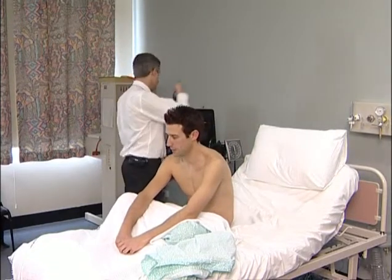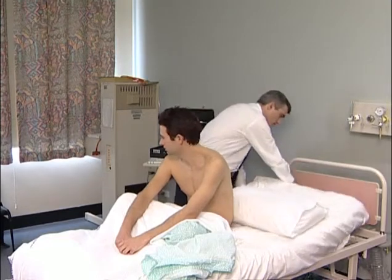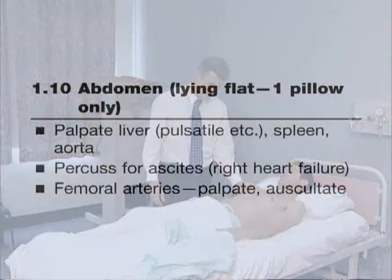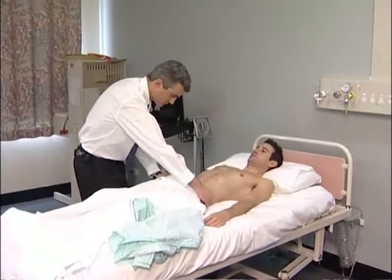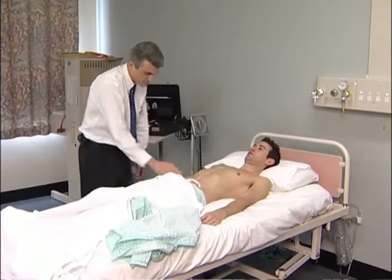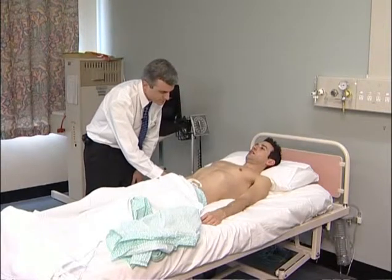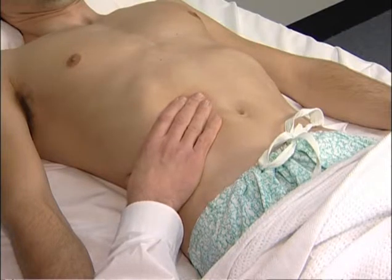The patient must now be laid flat so that the abdomen can be examined. The liver is felt with the right hand as the patient breathes in; a pulsatile liver is a reliable sign of tricuspid regurgitation. If endocarditis is suspected, the examiner should also feel for the spleen.